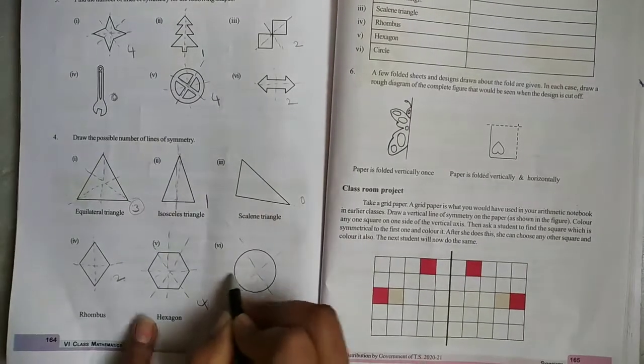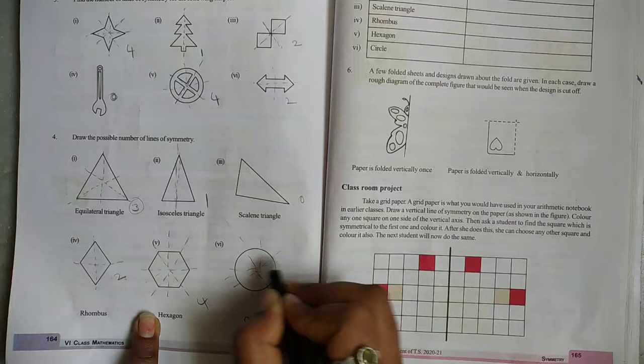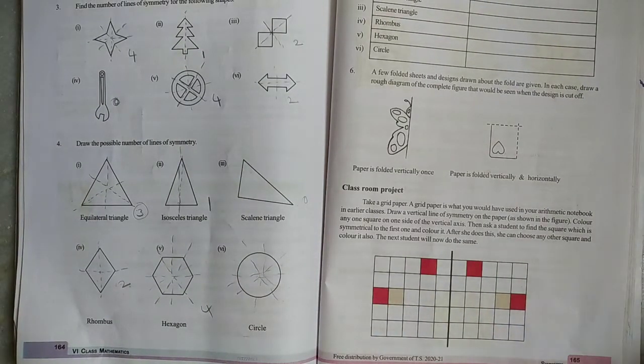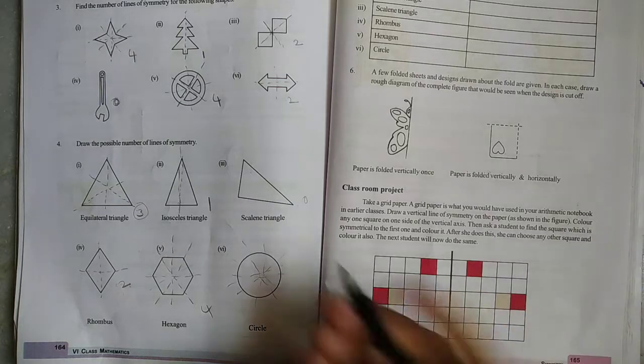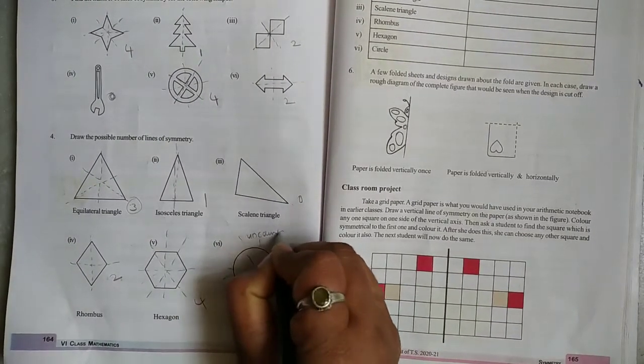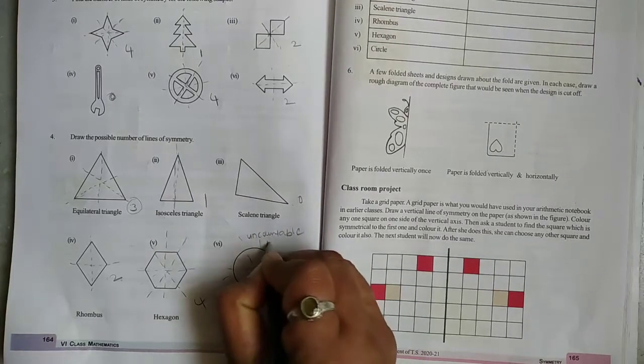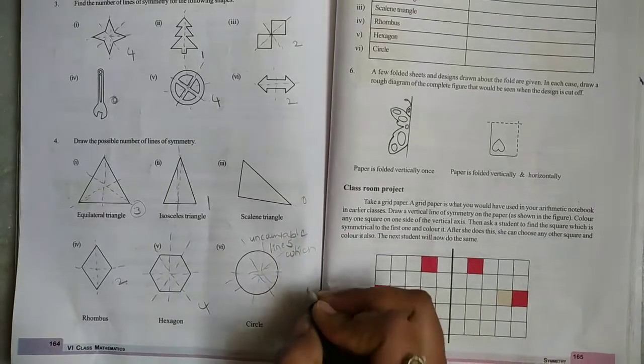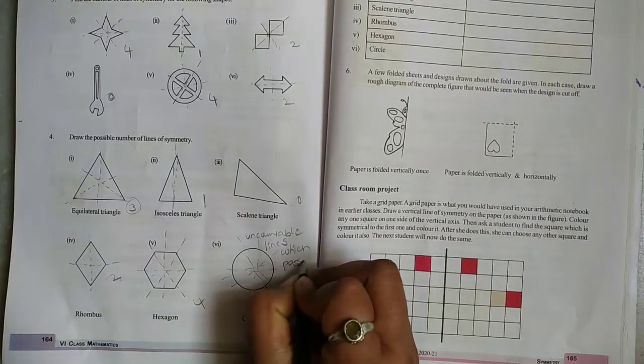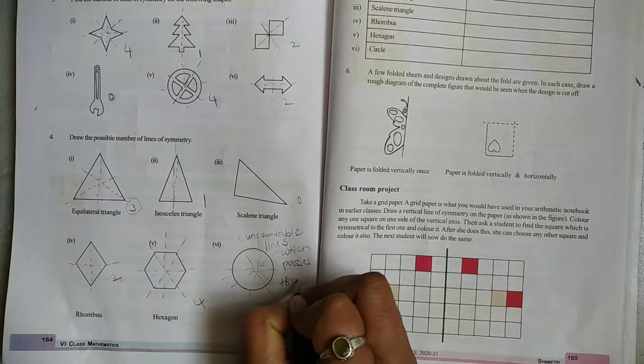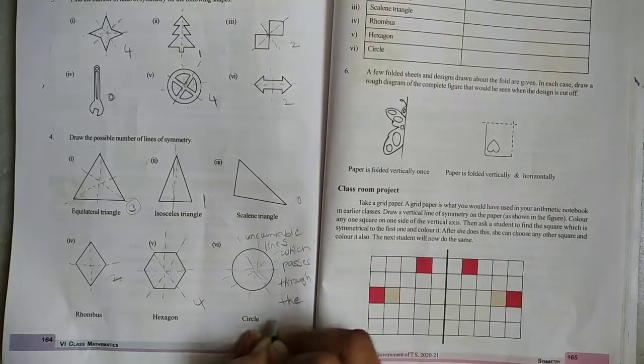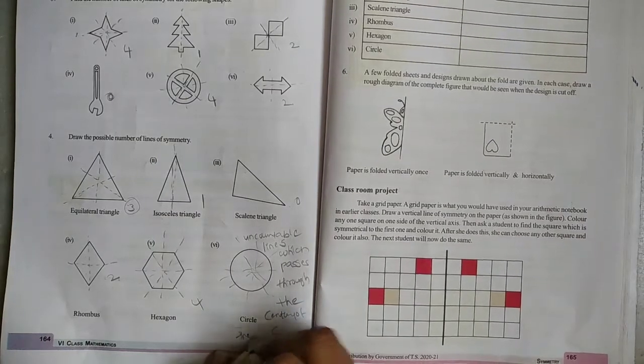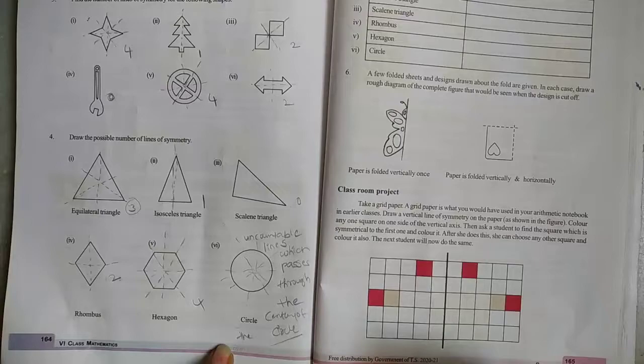It has uncountable line symmetry which passes through the center of the circle.